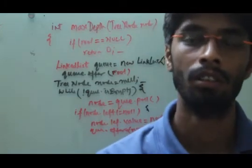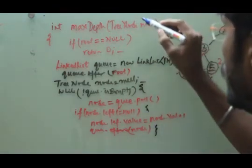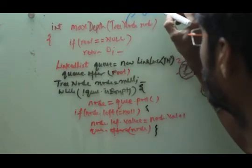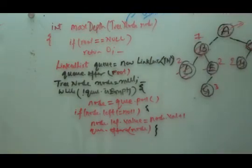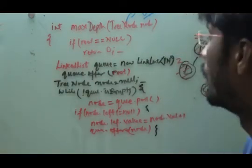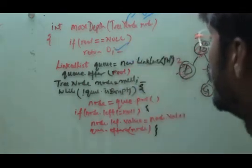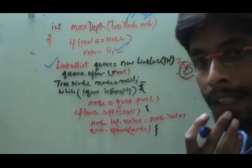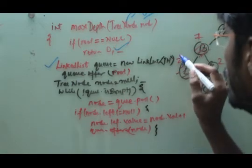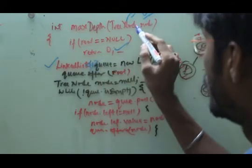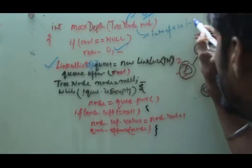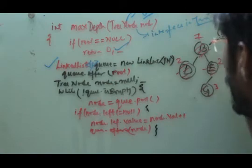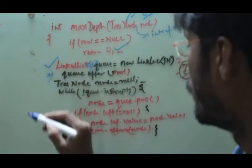Let us apply the BFS algorithm to find the maximum depth in a tree. We will take the help of the TreeNode interface provided by the Oracle API. When this node is null — meaning there is no tree at all — we will return the depth as 0. Then, as BFS requires, we have to create a queue. In Java there is a LinkedList implementation for creating a queue based on TreeNode. Then we add the root node to the queue.